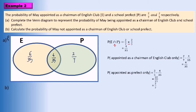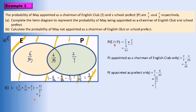The region outside both events equals 1 minus 15 over 35, which simplifies to 3 over 7. For part B, we calculate the probability of a man not being appointed as chairman of the English club or school prefect, which is the complement region outside — and that probability is 3 over 7.